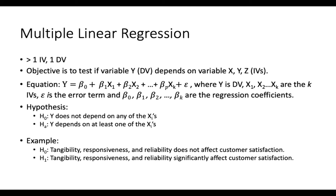Let's take a look at another example. The null hypothesis states that tangibility, responsiveness, and reliability — these IVs come from service quality, SERVQUAL by Parasuraman — do not affect customer satisfaction. The alternative hypothesis states that tangibility, responsiveness, and reliability significantly affect customer satisfaction. Pause for a moment and think about your research objective and hypothesis, and consider what analysis you would run.